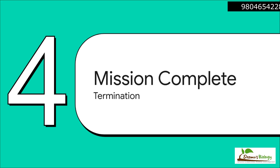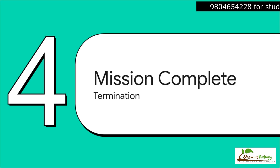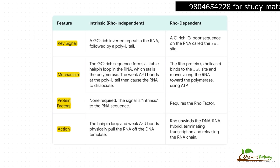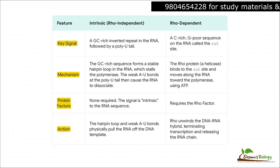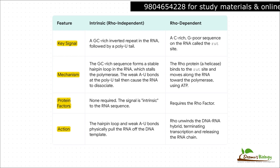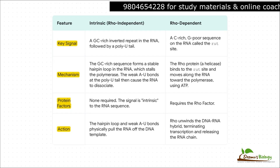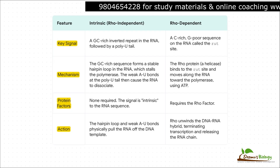Every good mission needs a clear ending. The polymerase can't just go on making RNA forever — there have to be signals encoded in the DNA that say: stop here. In prokaryotes, there are two main ways this happens. The first mechanism is called intrinsic termination. It's called intrinsic because the stop signal is built right into the RNA sequence itself — no extra proteins needed. As the RNA is made, a GC-rich section folds back on itself, creating a super-stable hairpin loop. This structure acts like a physical brake, stalling the polymerase. Right after the hairpin, there's a string of weak A-U base pairs connecting the RNA to the DNA. So you have the stall from the hairpin plus this really flimsy connection, and the whole thing just falls apart, releasing the RNA.